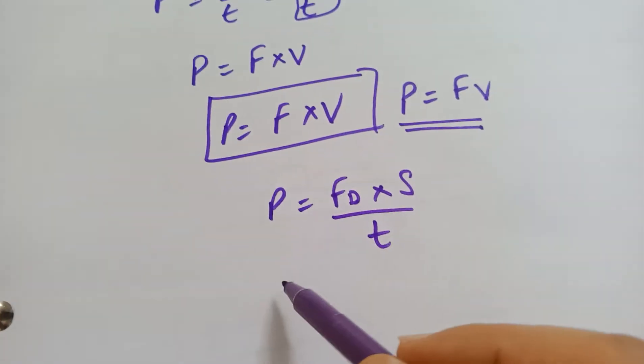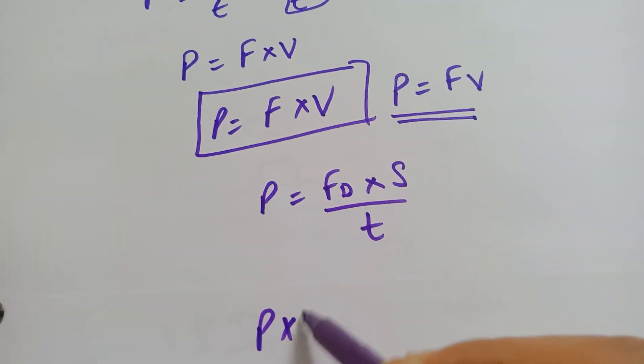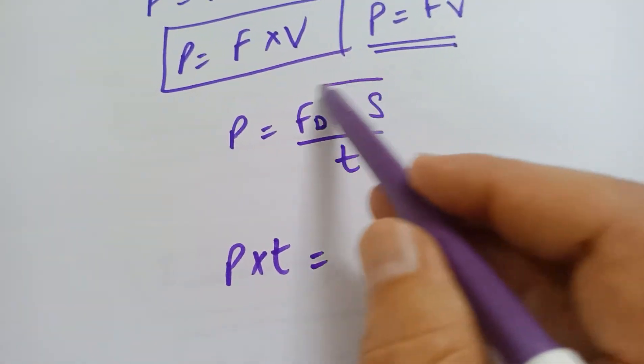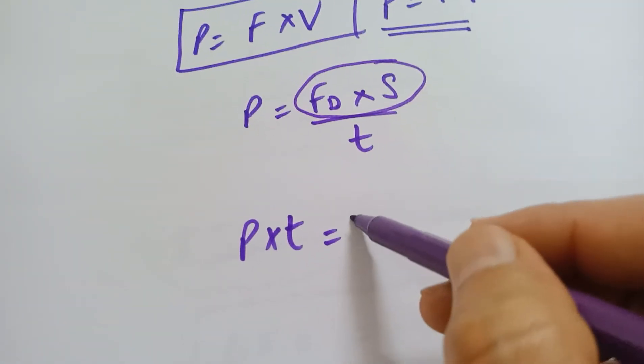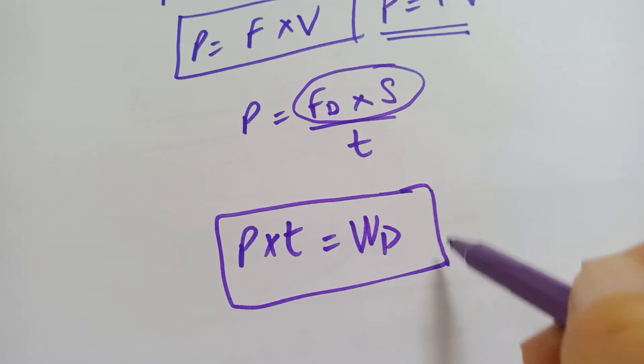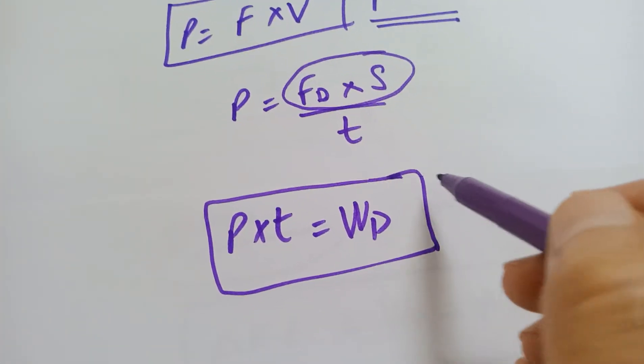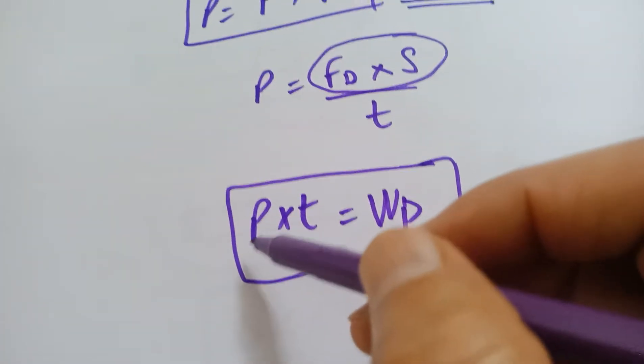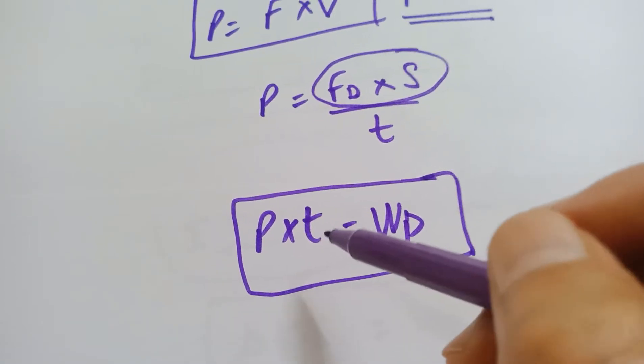If you cross multiply this, this becomes power into time that is equal to work done by the driving force. This is a very important formula. Only the very highly scoring students remember this, that work done by the driving force can also be equal to power times T.